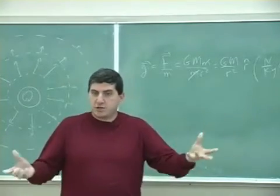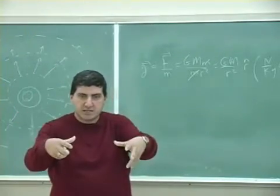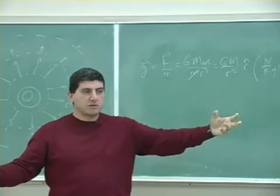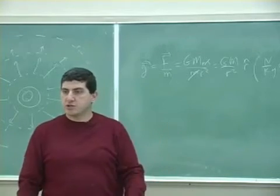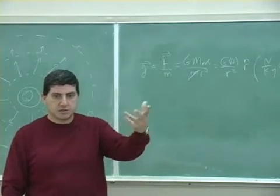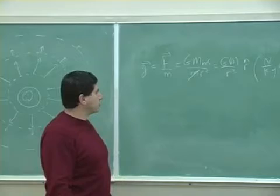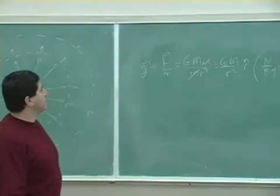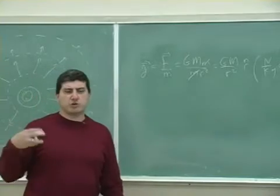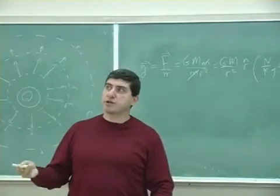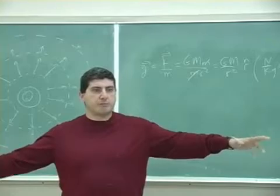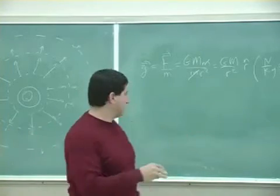How did Einstein explain this? Using general relativity — a mass placed in space distorts the space around it due to a four-dimensional tensor. He used his gravitational field equation to explain this. The easiest way to picture a field is to envision a huge blanket.